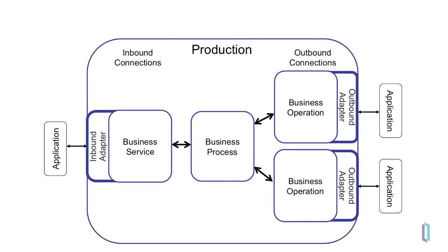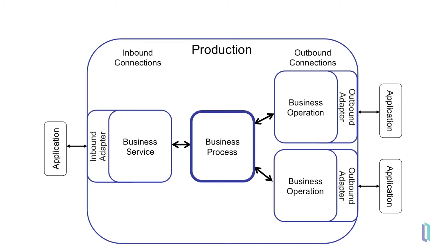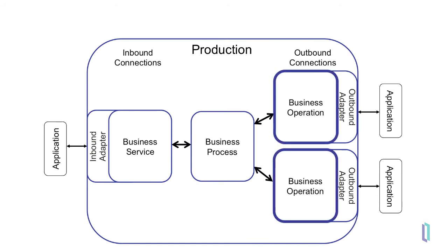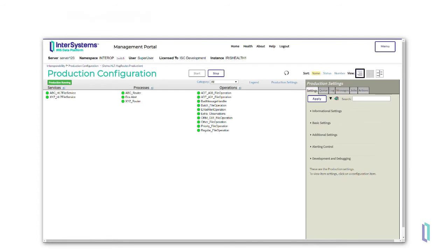Adapters handle the specific technology needed for communication with applications sending data into or receiving data from a production. Business services bring data into the production. Business processes orchestrate communication with external applications and resources. Business processes do not communicate outside of the production. Business operations send data out of the production. Here we see a production in the configuration page of the management portal. Business services are listed on the left, business processes are in the middle, and business operations on the right.